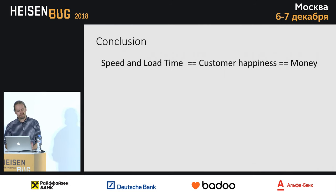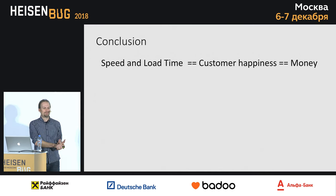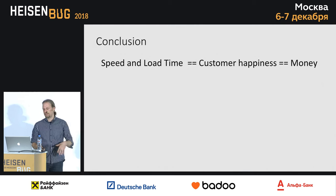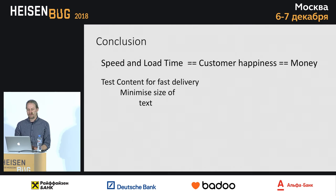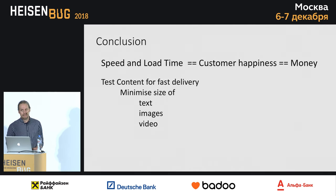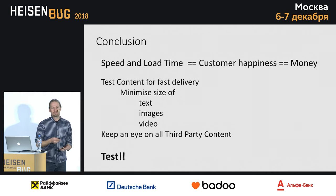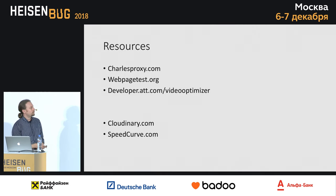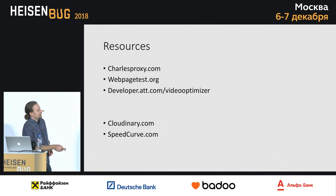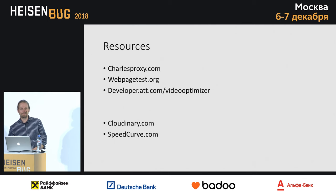In conclusion: when things load quickly, your customers are happy. When your customers are happy, they buy more stuff. When they buy more stuff, your app is successful. So: test your content for fast delivery, minimize the size of your text files, images, and video, keep an eye on all your third-party content, and keep testing — look for performance issues so you can identify and resolve them as quickly as possible. The tools I used: Charles Proxy, WebPageTest, Video Optimizer, Cloudinary and related tools for optimizing images and video, and Speed Curve for monitoring web pages over time. Thank you very much.